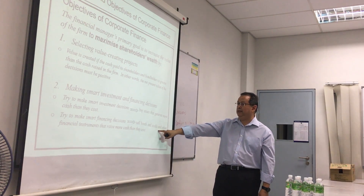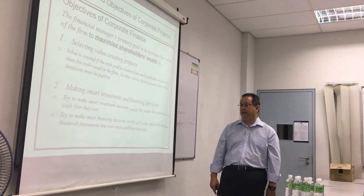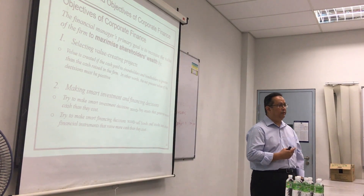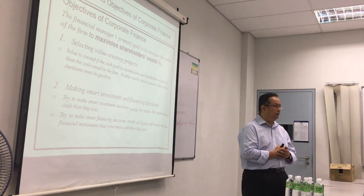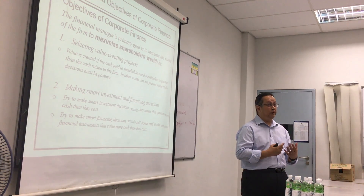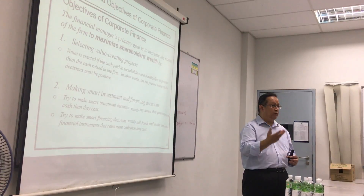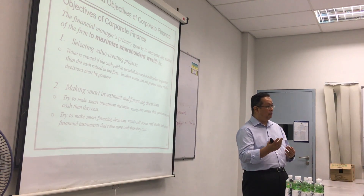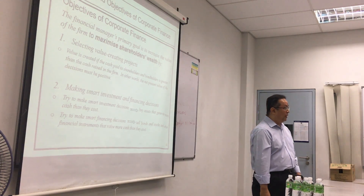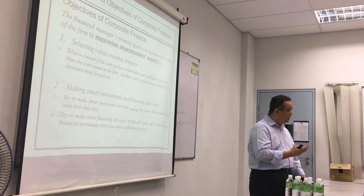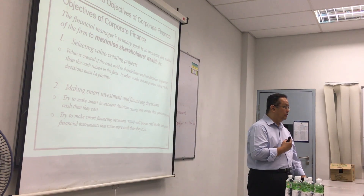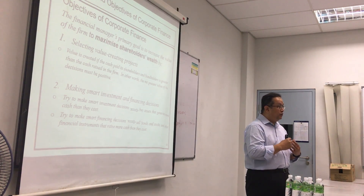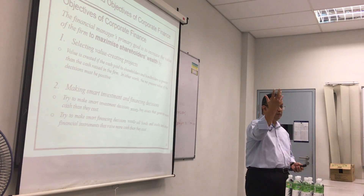We should also try to make smart financing decisions — sell bonds, stocks, and other financial instruments that raise more cash than they cost. The return from the issuance of these instruments is influenced by market forces. But you try to optimize. For example, if you study pecking order theory later on, it says that a company should use retained earnings first because it is the cheapest source of funding — you are not dealing with outside parties, so the cost should be cheaper. If you wish to raise more funds, then only go to third parties.